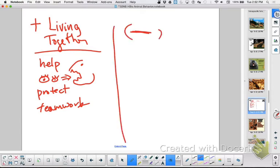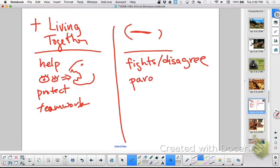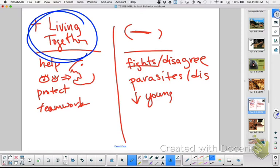What is the bad part of living together? What's negative about living together? Disagreements, fights. Parasites, we get sick, diseases. More food, you need more food to feed your group. Fewer overall young, because usually there's just like maybe one female that's having all the babies or one breeding pair. So if I put these on a scale, these benefits must outweigh these costs. Otherwise you wouldn't live together.